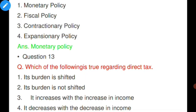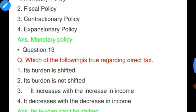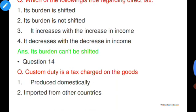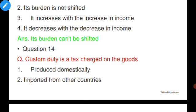Question number thirteen: Which of the following is true regarding direct taxes? Options: its burden is shifted; its burden is not shifted; it increases with increase in income; it decreases with decrease in income. Option B is correct — the burden of direct tax cannot be shifted. Direct taxes are paid by the body on whom they are imposed.